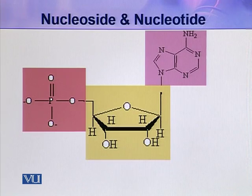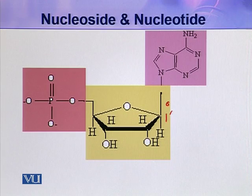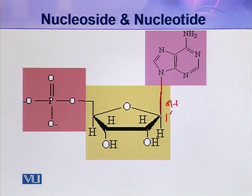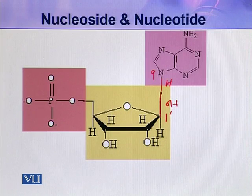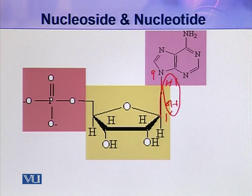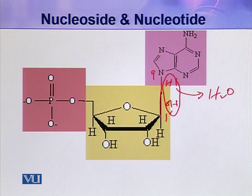Now let us see how these three components are joined together. As you can see here, this is the one-prime carbon, and at this one-prime carbon an OH group is present. The nitrogen of the nitrogenous base attaches with this one-prime carbon of the pentose sugar. This is nitrogen number nine, which contains a hydrogen atom. The hydrogen of the nitrogenous base and the hydroxyl of the pentose sugar combine, and with the elimination of a water molecule these two groups are attached. This attachment is called N-beta glycoside linkage.